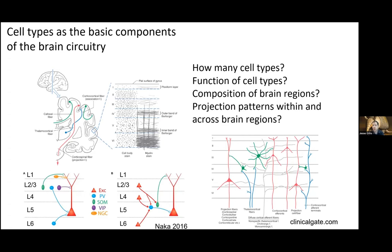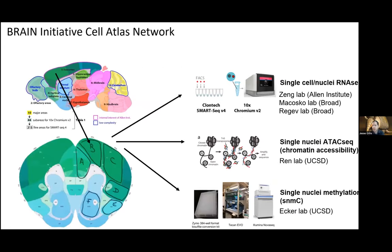Neuroscience in the last few years has been quite transformed by the search — with success — for definitions for cell types in RNA sequencing. NIH leapt on this and funded the Brain Initiative Cell Atlas Network, formerly the Brain Initiative Cell Census Network. It's a very large-scale effort to understand cell types within the brain. Most of the mouse work is largely completed, and the human data is now being generated.